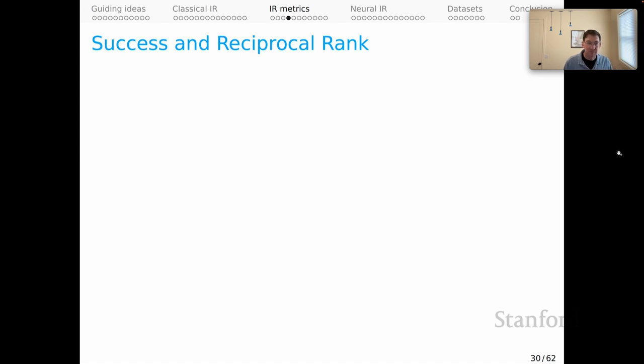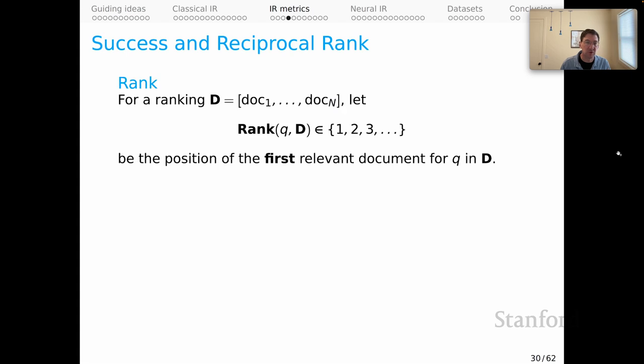So with those data types in place, let's start to think about the metrics themselves. We'll start with the simplest ones, which are success and reciprocal rank. A common ingredient for both of them is what I've called rank here. For a ranking D of our documents, we say that the rank for a query in that ranking is an integer, and that is the position of the first relevant document for the query in our ranking, the first one.